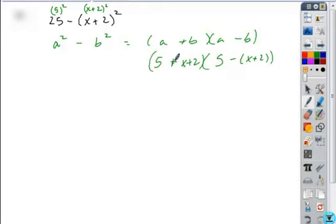And if you do that, you can simplify what you have. You get x plus 5 and 2 equals 7. And here if we distribute the negative, we get 5 minus x minus 2. This gives you 3 minus x, which you can now remove a common factor of a negative.